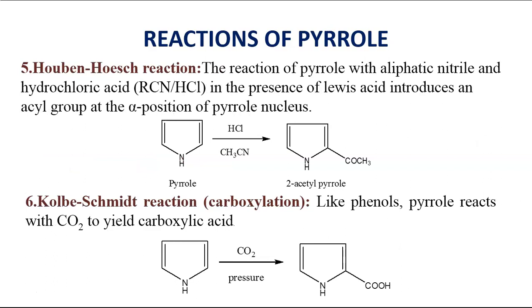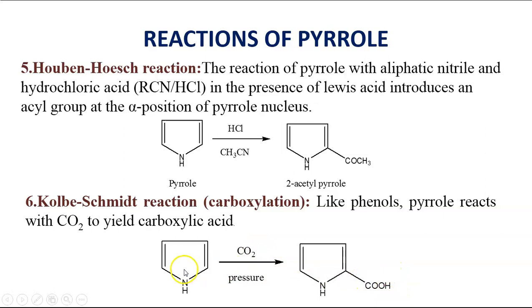The next reaction is the Houben-Hoesch reaction — the reaction of Pyrrole with an aliphatic nitrile and hydrochloric acid in presence of a Lewis acid — which introduces an acyl group at the alpha position of the Pyrrole nucleus. The Kolbe-Schmidt reaction is a carboxylation reaction: like phenols, Pyrroles also react with CO2 to yield a carboxylic acid at the second position.